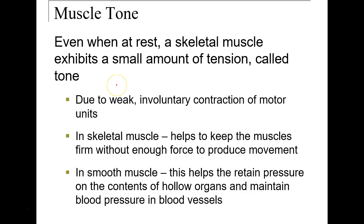Muscle tone: due to weak involuntary contractions in most motor units, we keep a certain tone in our muscles even when not voluntarily trying. This helps stabilize joints in the body. For skeletal muscle it keeps everything firm without producing movement; for smooth muscle it retains pressure on the contents of hollow organs, such as blood pressure in blood vessels.